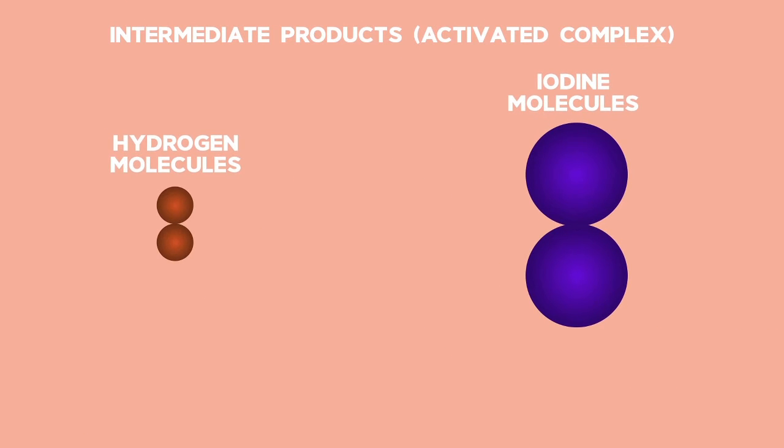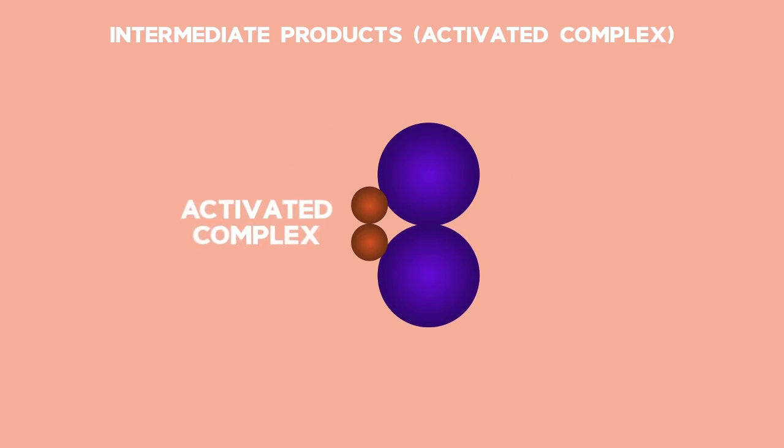Activated complex. This is a highly unstable stage that is formed during a chemical reaction. It is a combination of the molecules of all the reacting substances.